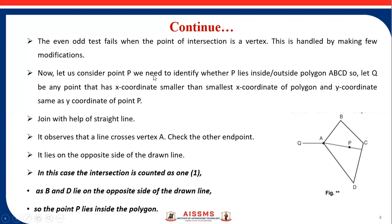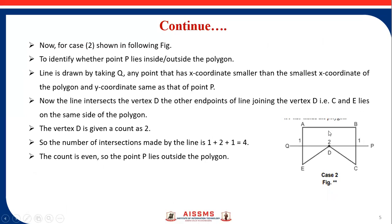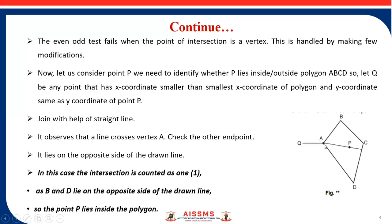Consider point P — we need to identify whether P lies inside or outside polygon ABCD. Let Q be any point with X coordinate smaller than the smallest X coordinate of the polygon and Y coordinate the same as point P. Join P and Q with a straight line. The line crosses vertex A. We observe that the other endpoints of the edges meeting at A — that is, B and D — lie on opposite sides of the drawn line. In this case, the intersection is counted as 1, and since B and D are on opposite sides, point P lies inside the polygon.